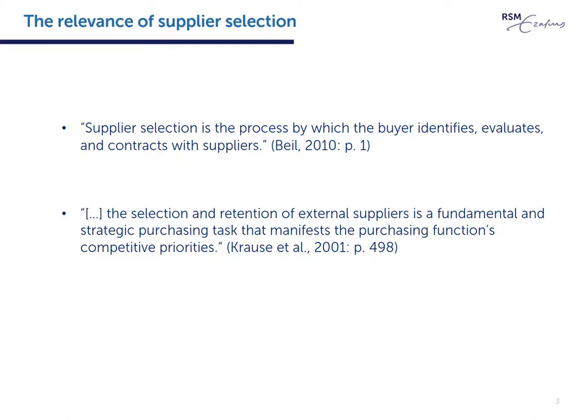It will be clear that supplier selection is an important process within purchasing and supply management. In the work of Krause and colleagues, supplier selection and retention is primarily framed as the manifestation — the expression — of the purchasing function's competitive priorities. Such priorities are not only defined at the level of the PSM function as a whole, but also, and most importantly, at the level of each sourcing category.